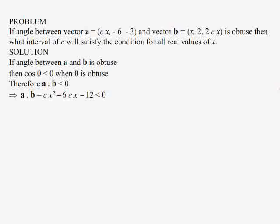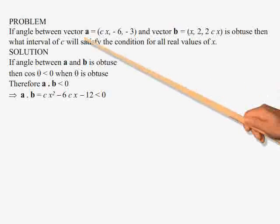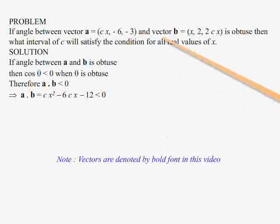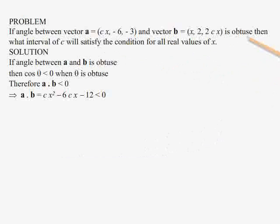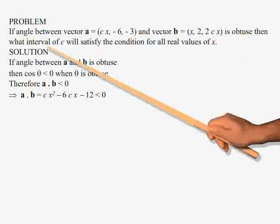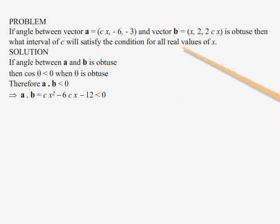I will try to solve a typical problem. Here vector a and vector b are given. It is given that the angle between vectors a and b is obtuse. The problem is to find the interval of c, i.e., within which interval c should lie, such that this condition is always true for all real values of x.